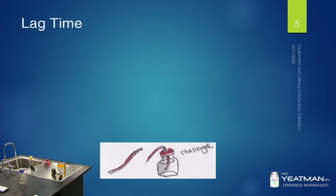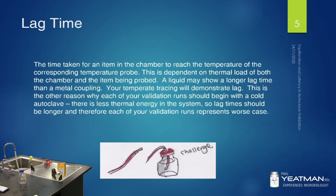So what is the lag time? The lag time is the time taken for an item in the chamber to reach the temperature of the corresponding temperature probe. This is dependent on the thermal load of both the chamber and the item being probed. A liquid may show a longer lag time than a metal coupling, or it may not — your temperature tracing will demonstrate where the lag is. This is the other reason why each validation run should begin with a cold autoclave: there is less thermal energy in the system, so lag time should be longer, and therefore each validation run will represent a worst case.